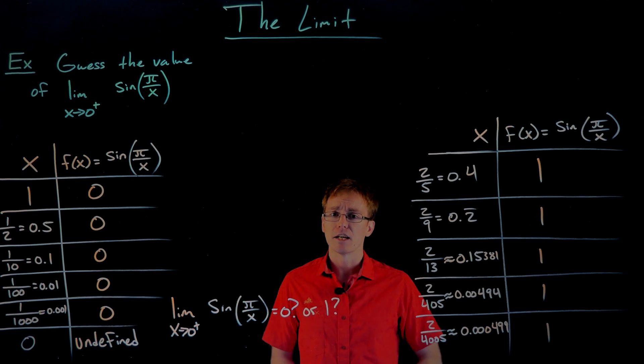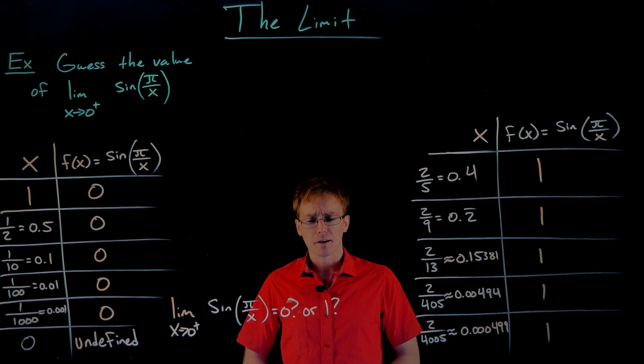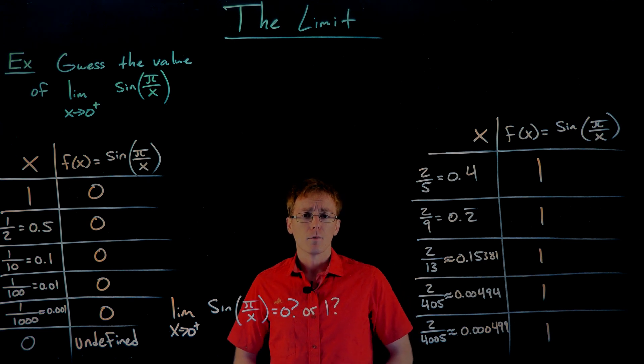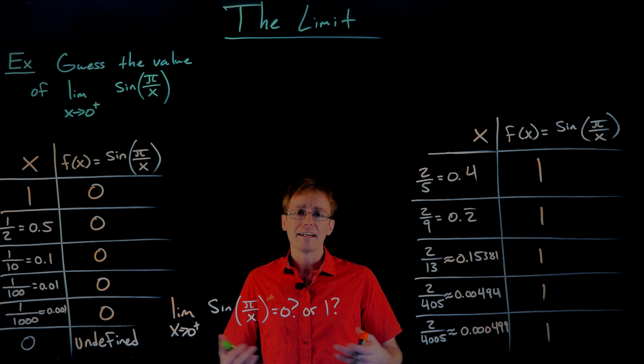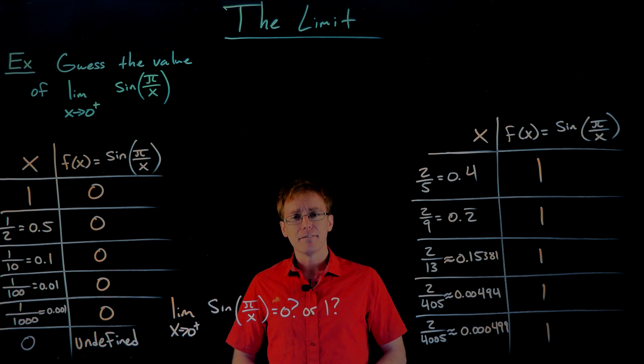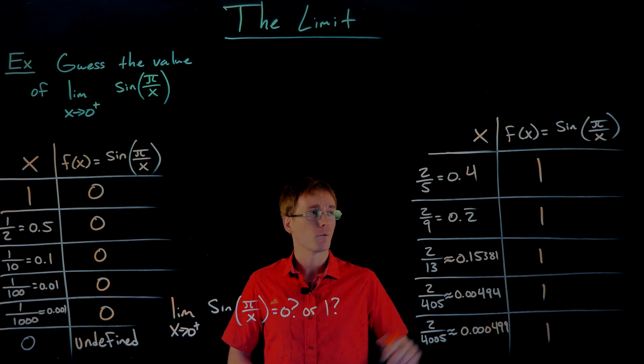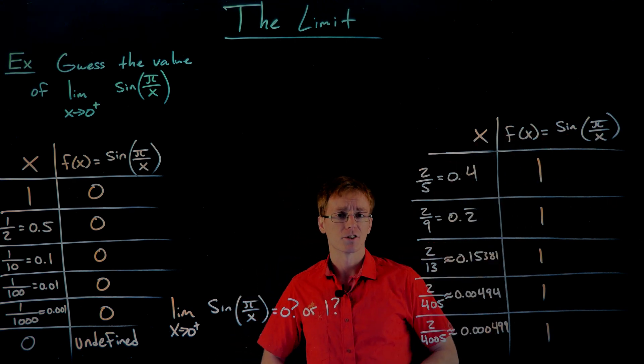So based off our second table and what we've been doing before, it looks like we could say that our limit approaches one. Well, the truth is this limit actually does not exist. It doesn't approach zero or one or any number. It actually oscillates infinitely many times between the values of negative one and positive one, which is the range of our sine function.